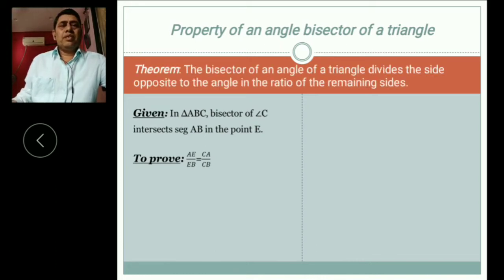In our textbook there is a theorem. The theorem is the bisector of an angle of a triangle divides the side opposite to the angle in the ratio of the remaining sides.